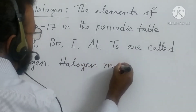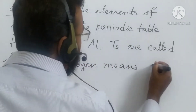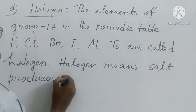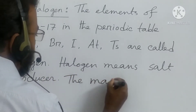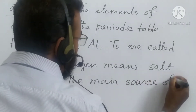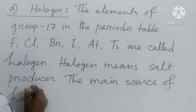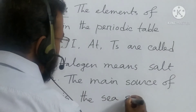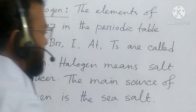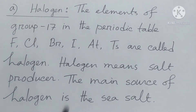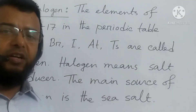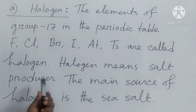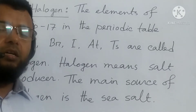Halogen means salt producer. The main source of halogen is sea salt. So the elements of group 17 in the periodic table — chlorine, bromine, iodine, astatine, and tennessine — are called halogen. Halogen means salt producer and the main source of halogen is sea salt.